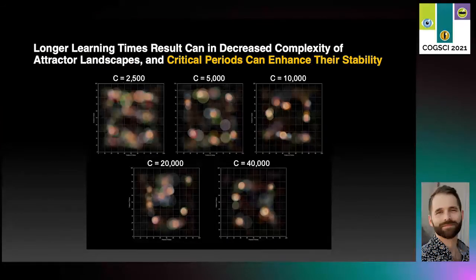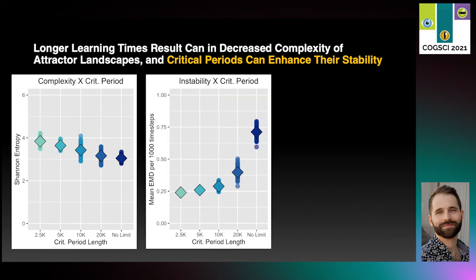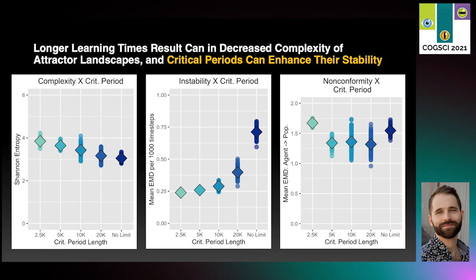We also examined the effect of adding a critical period, implemented by turning off learning after some number of time steps c. As you can see in the top left, the distribution is pretty messy when learning times are very short. As the critical period gets longer, longer learning times again make the population distributions less complex. But critical periods of learning that are shorter than the lifespan also make the distributions much more stable. So both of these effects suggest that too much learning can be a bad thing for cultural evolution. We also see a non-linear effect of critical periods on conformity, with moderate learning times promoting the greatest alignment.